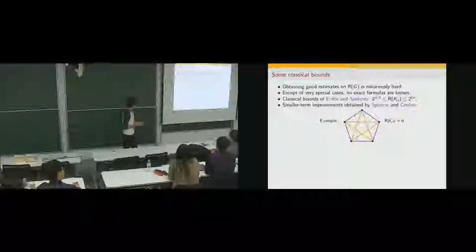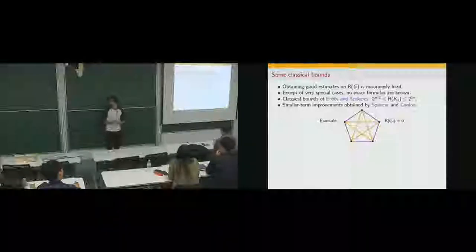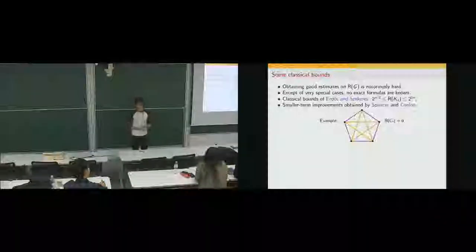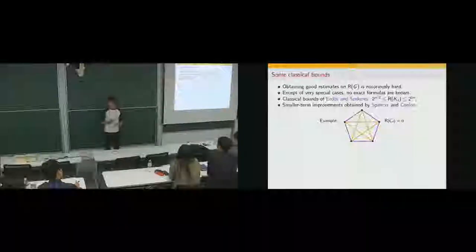Here are some examples. You can see a two-coloring of the edges of the complete graph on five vertices which doesn't contain a monochromatic copy of the 4-cycle. This shows that the Ramsey number of the 4-cycle is at least 6. Using some case analysis, you can show this is tight, so the Ramsey number of the 4-cycle is exactly 6. This two-coloring also shows that the Ramsey number of the triangle is at least 6, since you cannot find a monochromatic triangle either — and similarly, this is tight, so the Ramsey number of the triangle is also exactly 6.